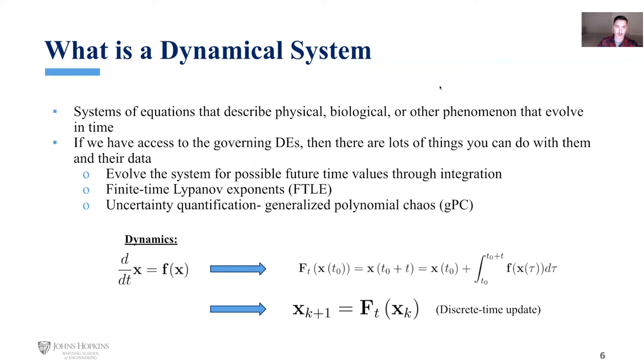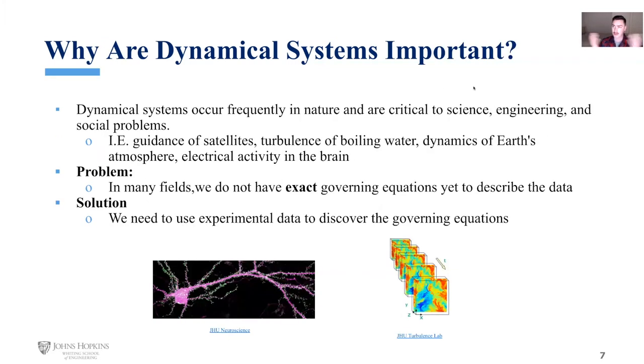So why are dynamical systems so important? Dynamical systems occur everywhere in both nature and our universe. You can see them from something as simple as stirring your coffee in the morning to when you step outside in the cold and when you breathe out your air, the air that you breathe out will frost and it'll spiral in the air. That's a dynamical system.